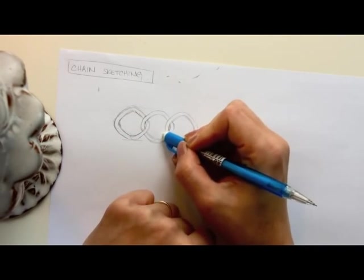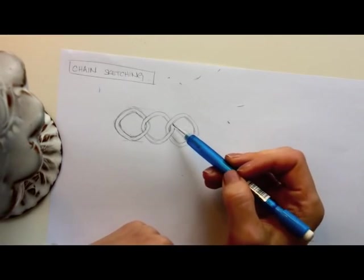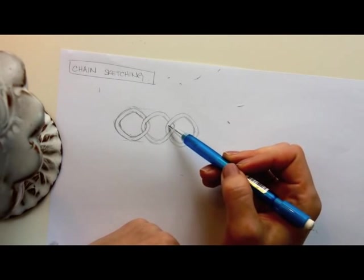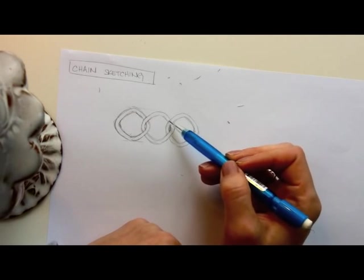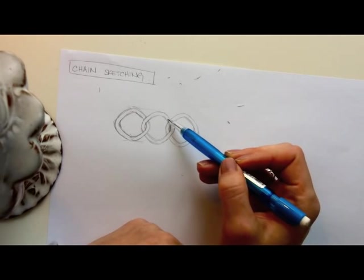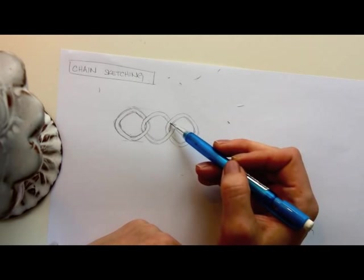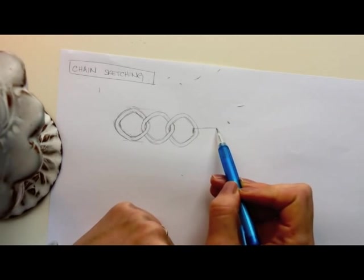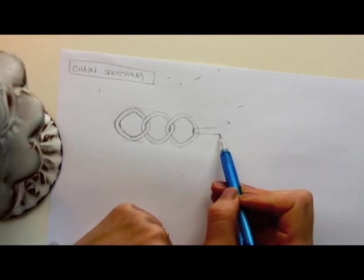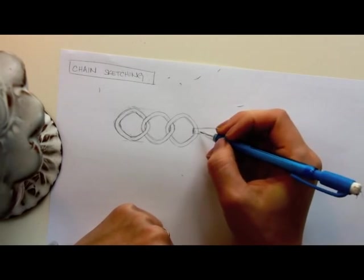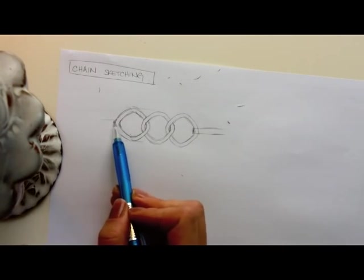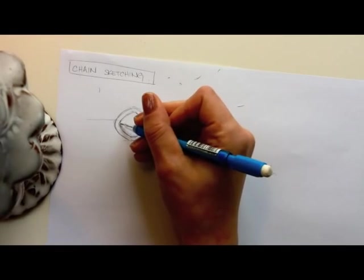So again, whichever ring overlaps the other, you erase the one that's being overlapped. So if ring three overlaps ring two, you erase the lines of ring two.